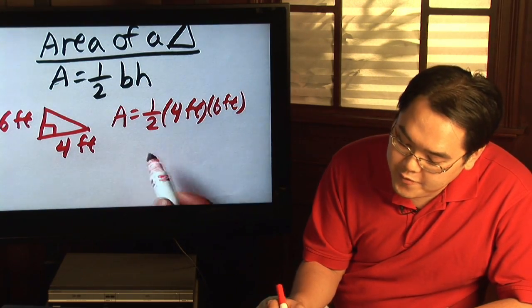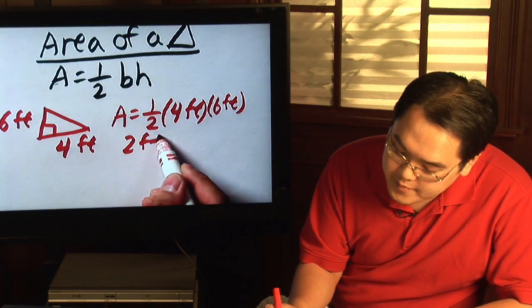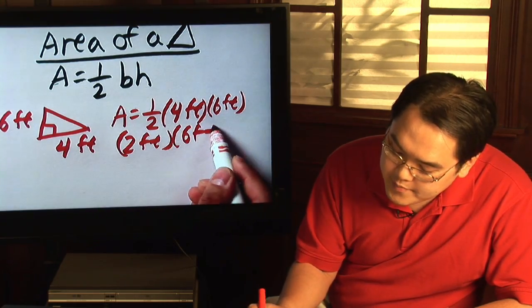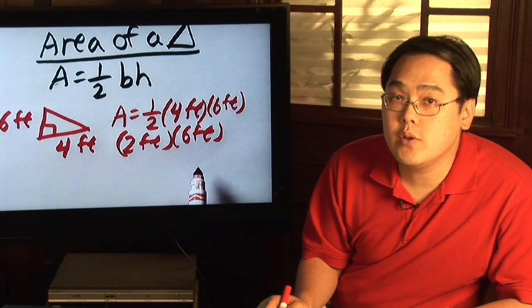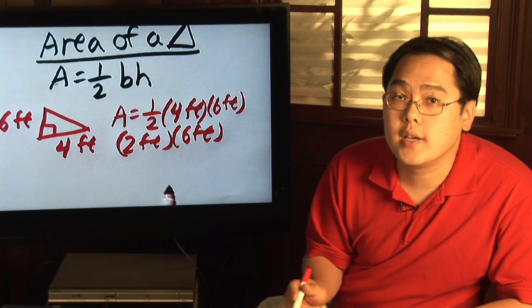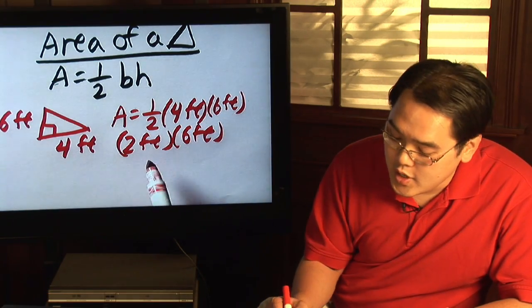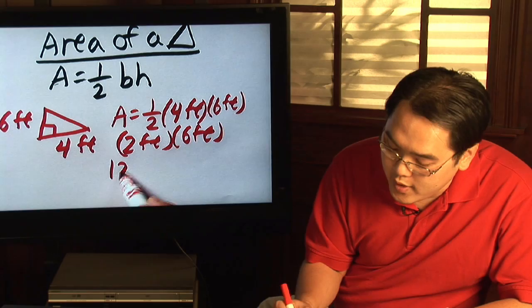Half of four feet is two feet times six feet. Now you want to keep the units in there because measuring area requires square units. So two times six is going to be twelve,